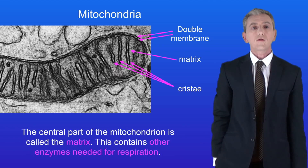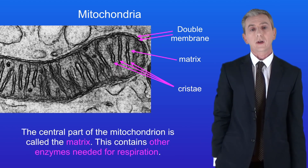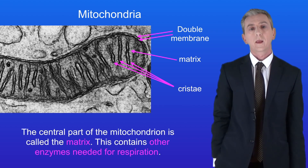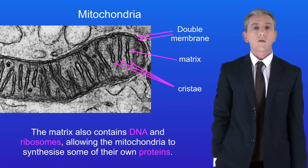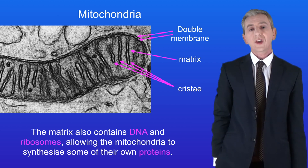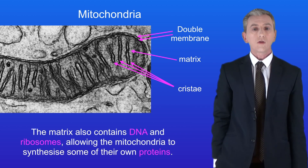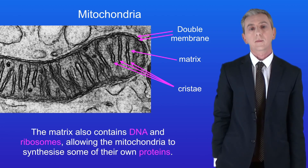The central part of the mitochondrion is called the matrix, and this contains other enzymes needed for respiration. Mitochondria are unusual in that they contain their own DNA, which is separate from the DNA in the nucleus. The mitochondrial DNA is found in the matrix.